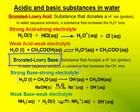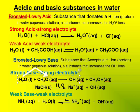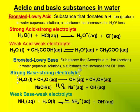A Bronsted-Lowry base is a substance that accepts H+ ions, or protons. In water, a basic substance increases the hydroxide ion concentration. CH3O- is an example of a strong base, where it accepts an H+ from the water, producing hydroxide and CH3OH. The type of strong base you will encounter in this class will be metal hydroxides, predominantly group 1 metal hydroxides, such as lithium, sodium, and potassium. Here I have sodium hydroxide as an example.